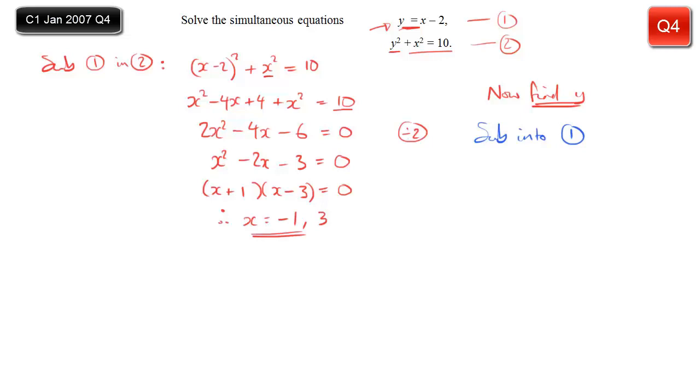So taking my first x value, when x equals minus 1, put that into equation 1. It tells you that y is equal to the x value, take away 2. So in this case, y equals minus 1, take away 2. And minus 1, take away 2 is minus 3.